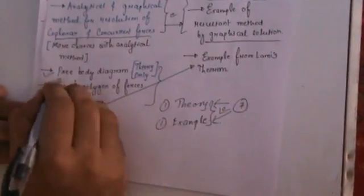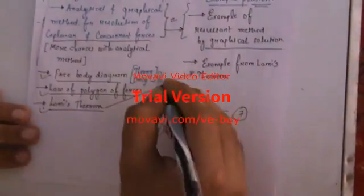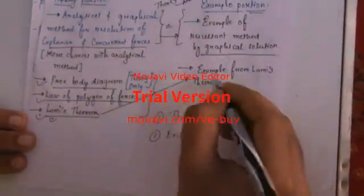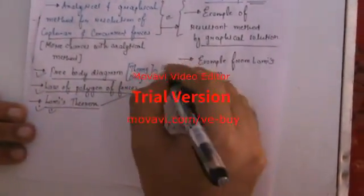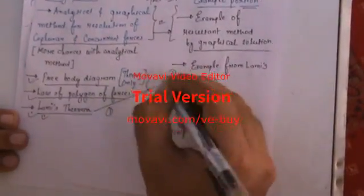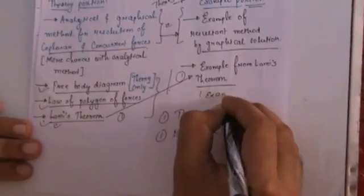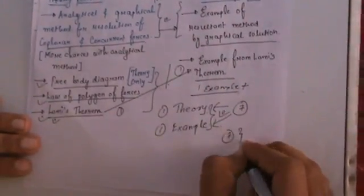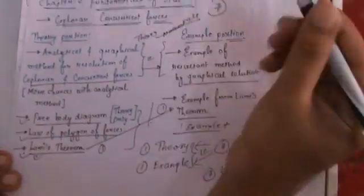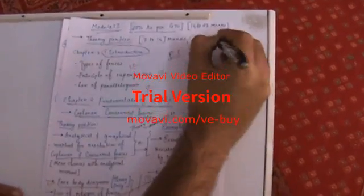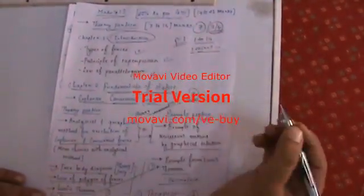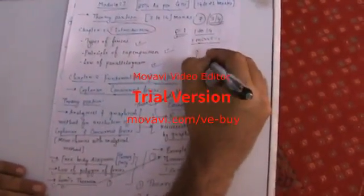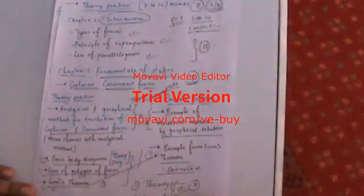From these three theories, you can expect either Lamy's theorem theory or a Lamy's theorem example in the exam, or one example with the Lamy's theorem definition. This can be treated as a 7-mark chapter, and combined with the coplanar concurrent forces chapter, you can expect 3 to 4 marks from definitions. Going through both chapters, you can easily get 10 marks.